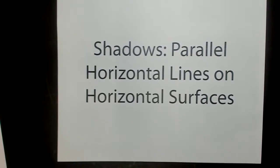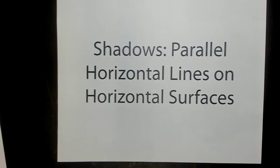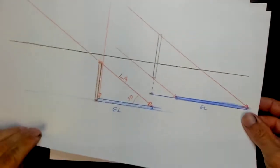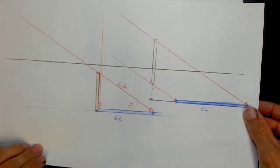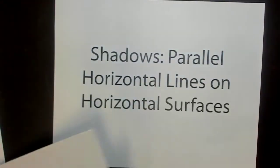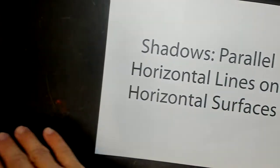Continuing on with shadows. This is a parallel light — with the sun directly to the viewer's left or right. We did vertical lines last time; it looks something like this. We're going to do horizontal lines this time.